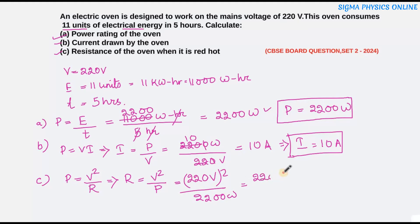It is 220 into 220 by 2200. This gets cancelled, so it's 22 ohm. Therefore, the resistance of the oven is 22 ohm.